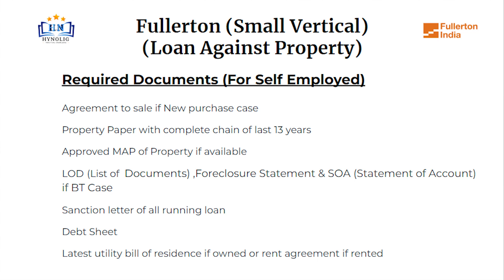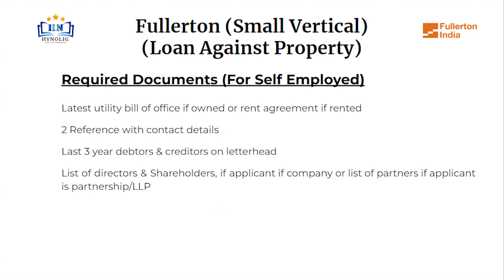Further self-employed documents include: LOD, list of documents, foreclosure statement, NSOE, statement of account if BT case, sanction letter of all running loans, debt sheet, latest utility bill of residence if owned or rent agreement if rented, latest utility bill of office if owned or rent agreement if rented, two references with contact details, last 3-year debtors and creditors on letterhead, and list of directors and shareholders if applicant is a company, or list of partners if applicant is a partnership or LLP.